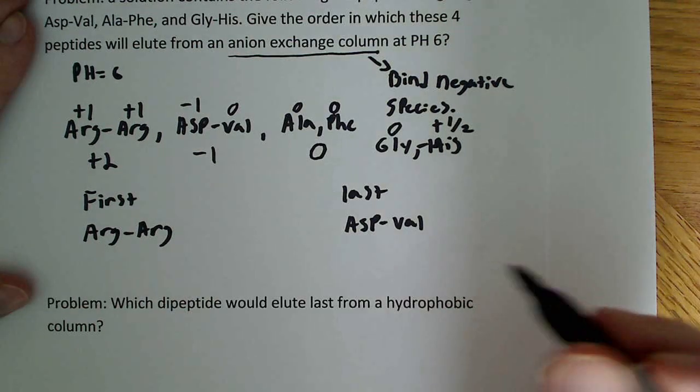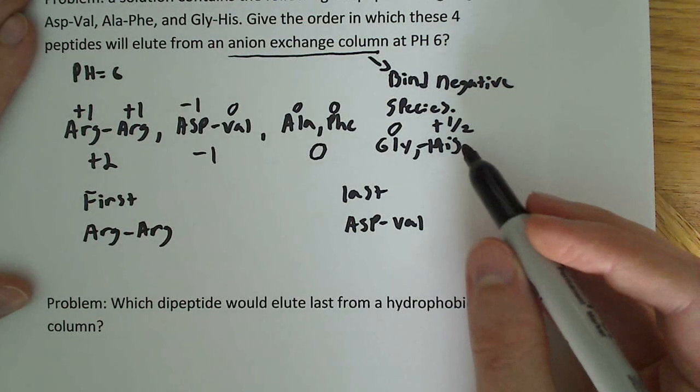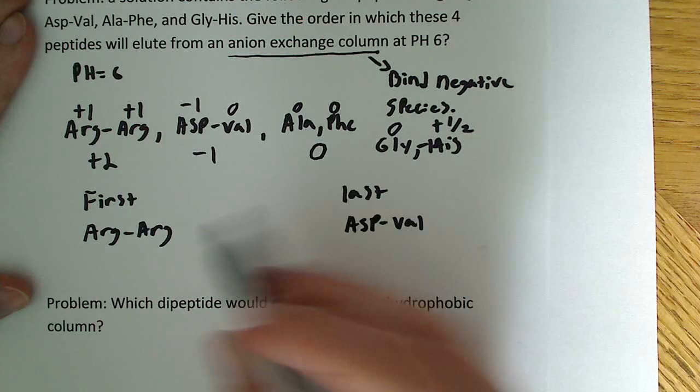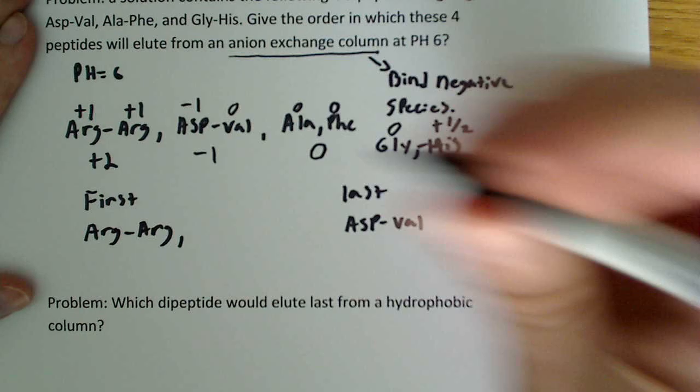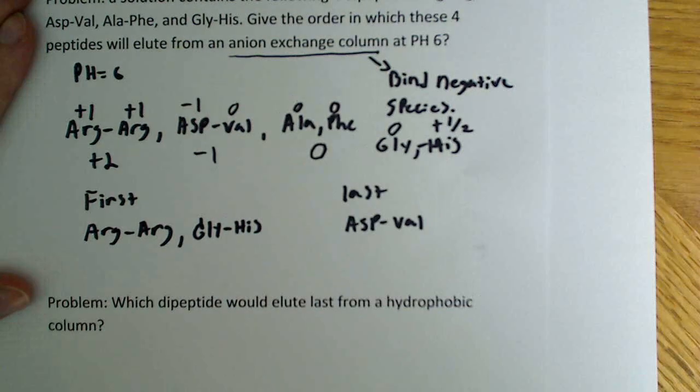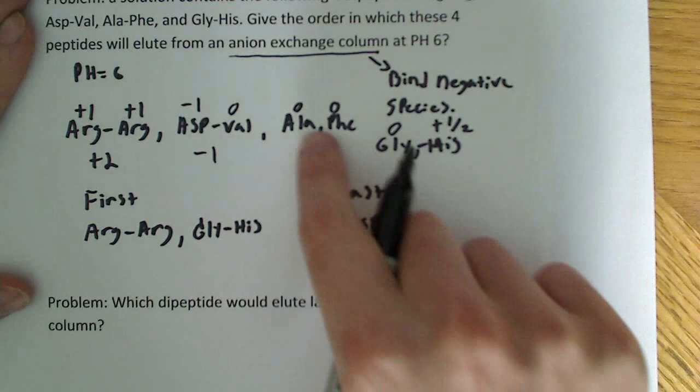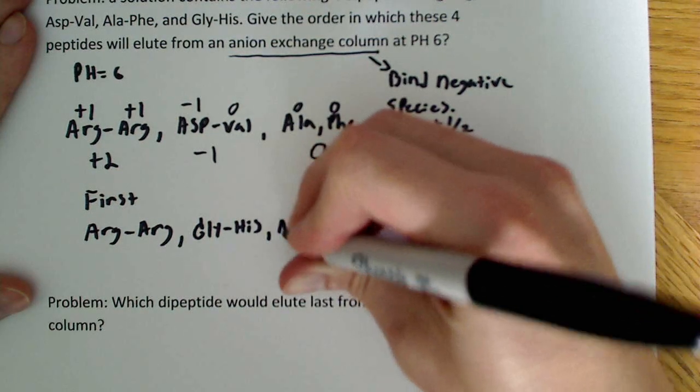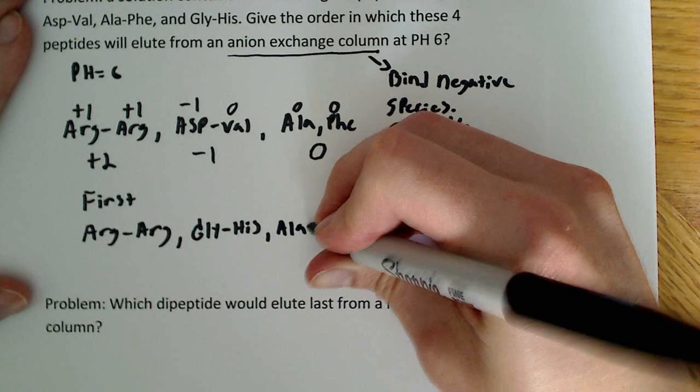Now if we're going to go in order for the rest of these, we can see that glycine-histidine plus 1.5, it has a positive charge. We just said positive charges repel. So the next group here, glycine-histidine. And alanine and phenylalanine both have zero charge, they're hydrophobic, so they're going to be right here.